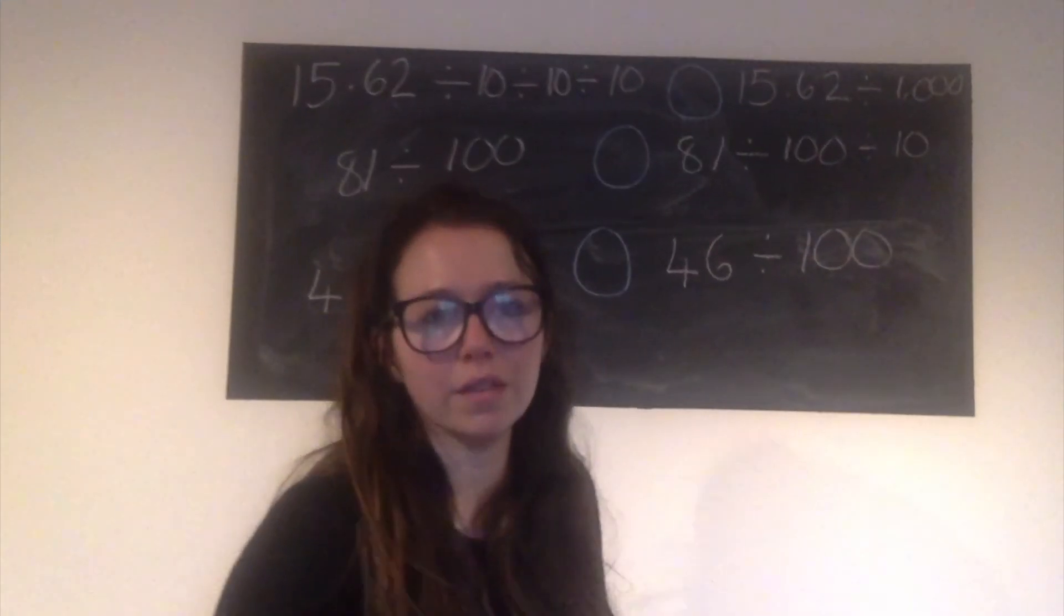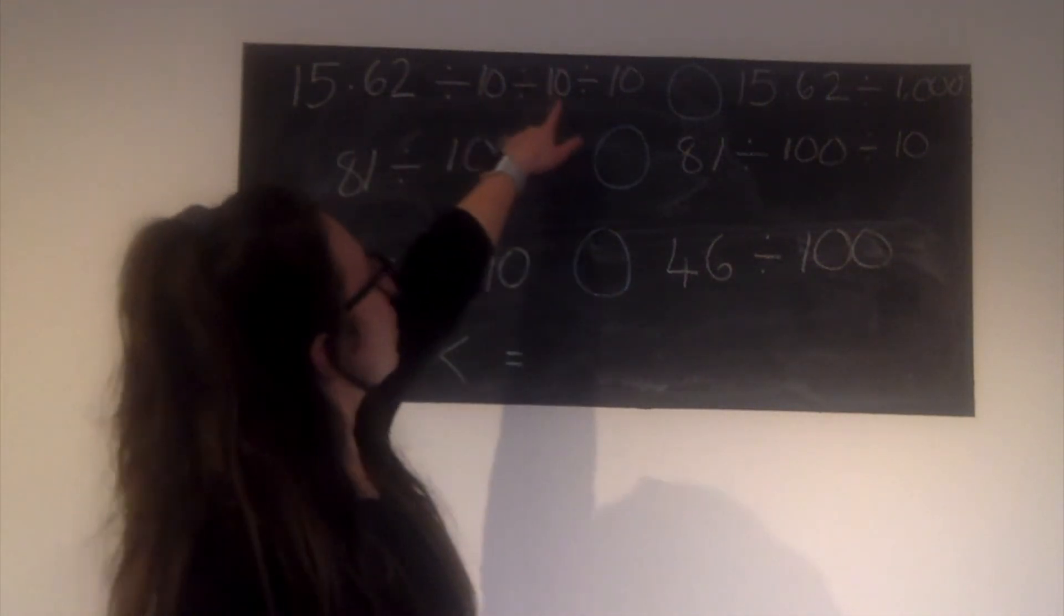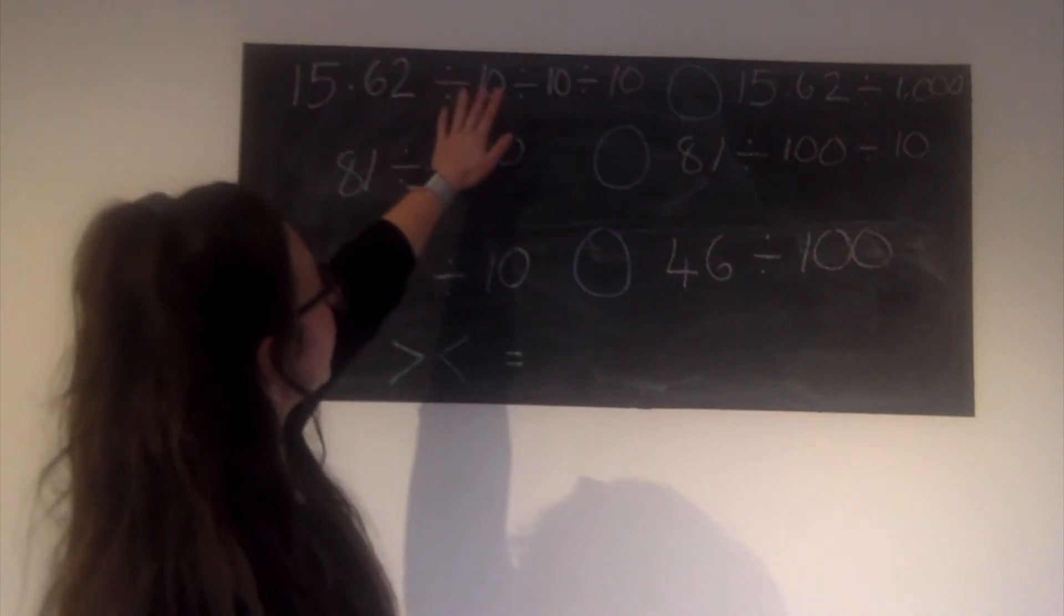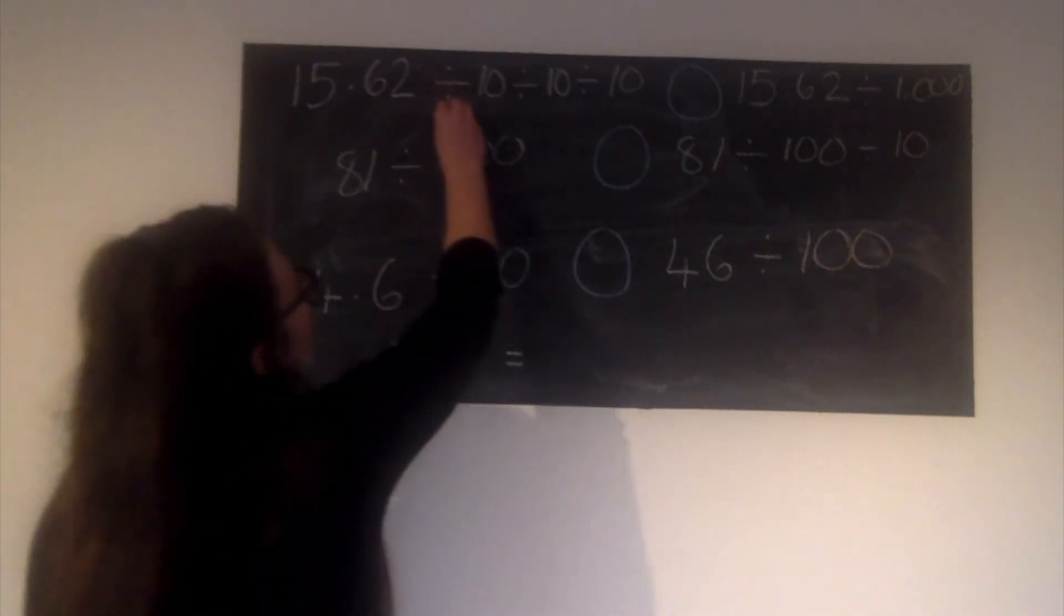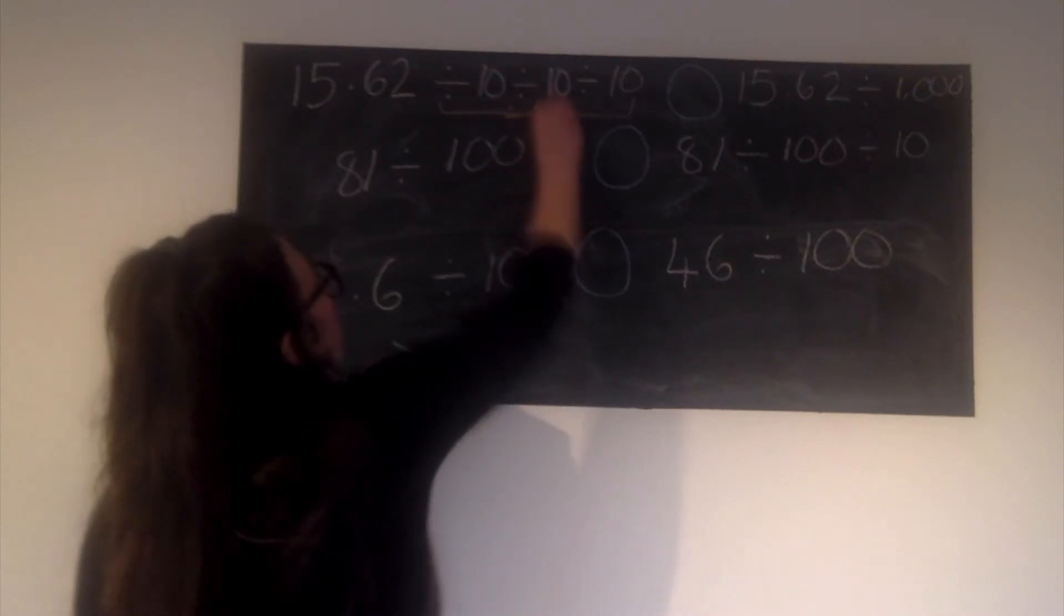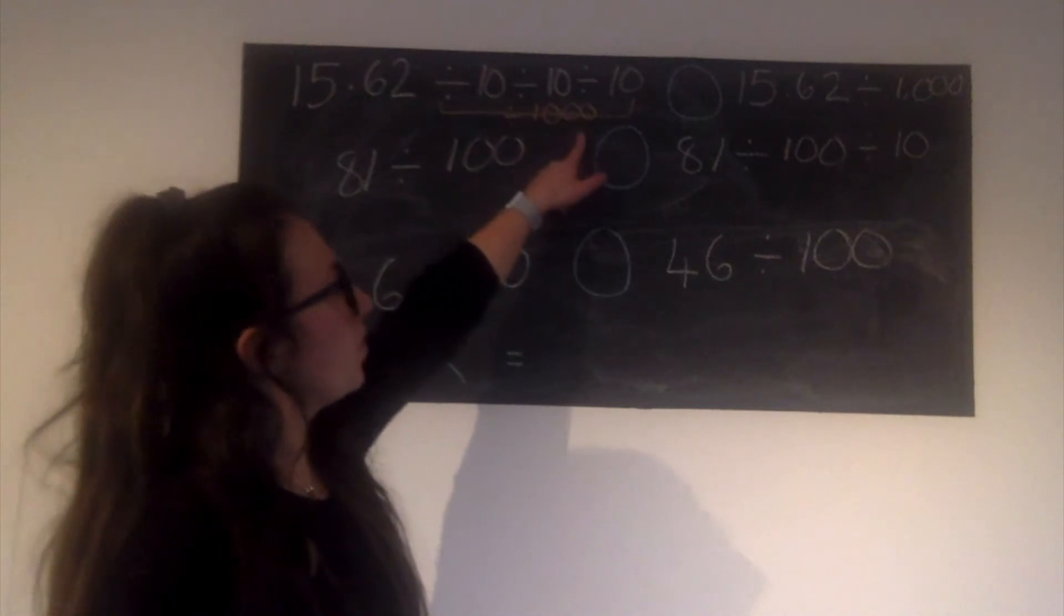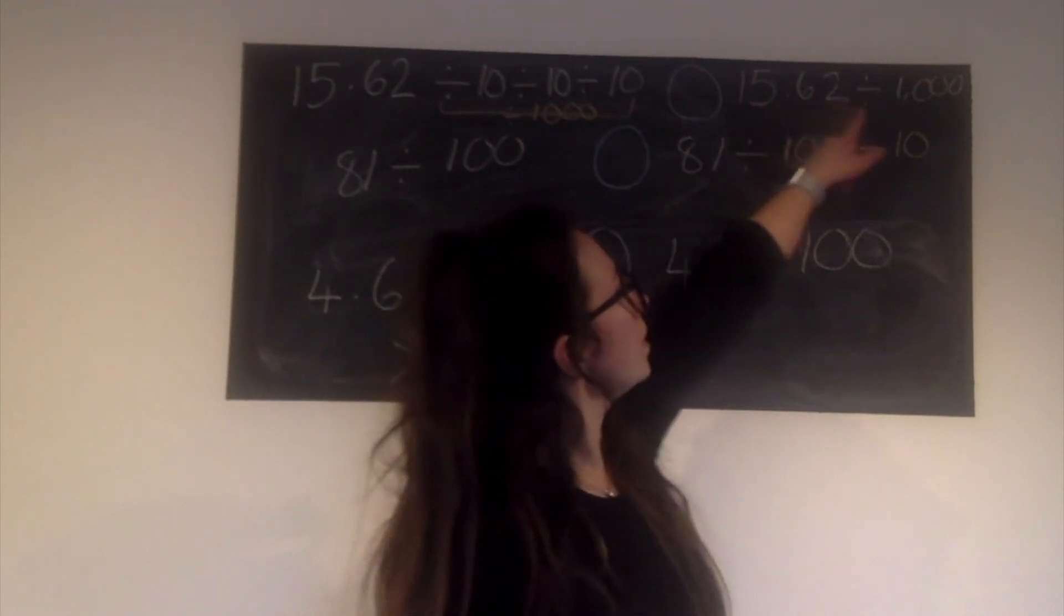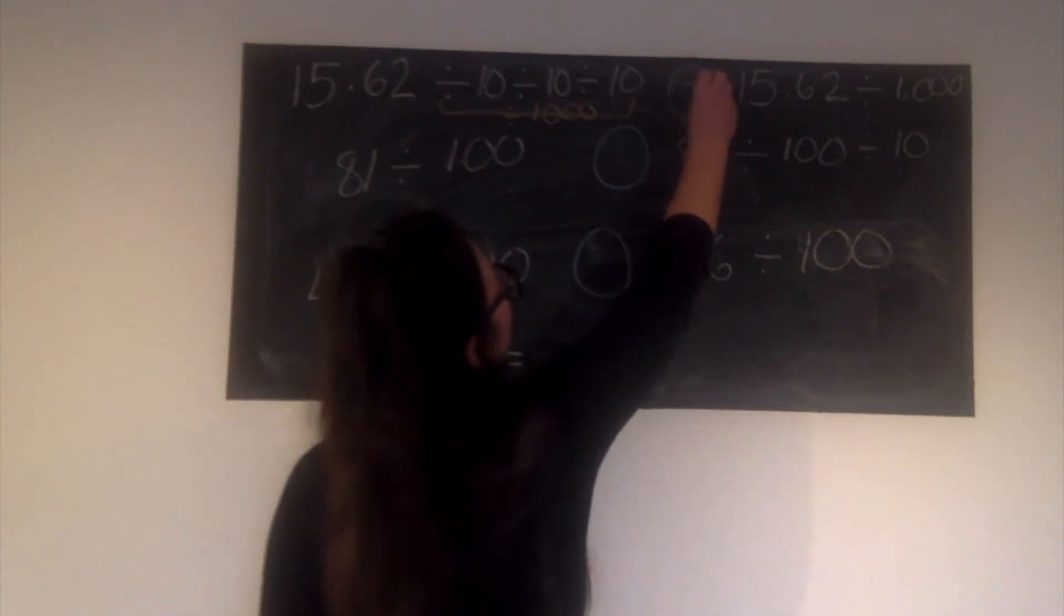Let's go through the answers. So this first one: 15.62 divided by 10, divided by 10, divided by 10. So if we are doing something divided by 10, then again and again, we're actually dividing something by 10, 100, 1000. So our answer would be 15.62 divided by 1000. Well, that's the same as this calculation over here, 15.62 divided by 1000. So I need my equal sign. Those are the same thing.